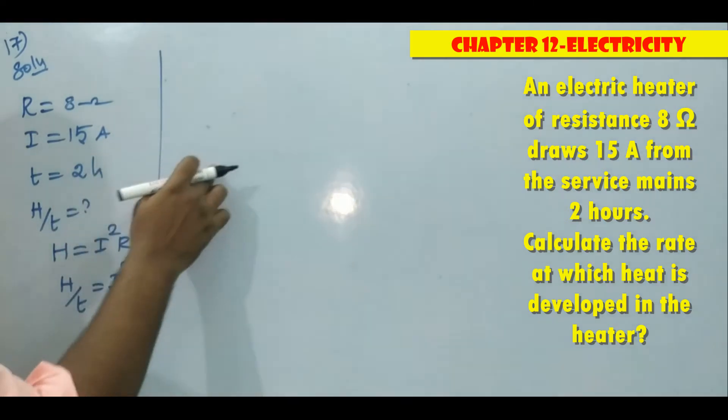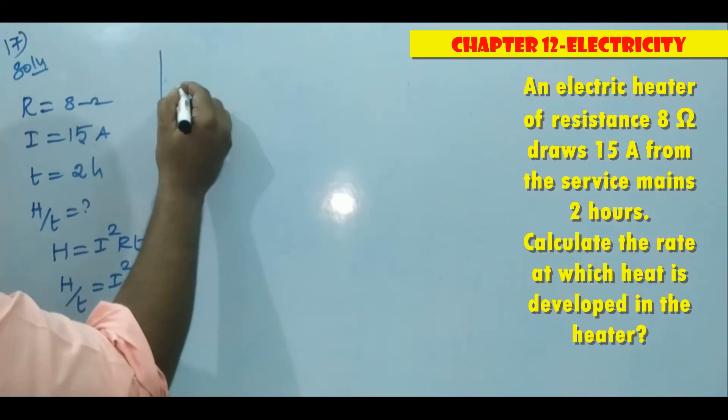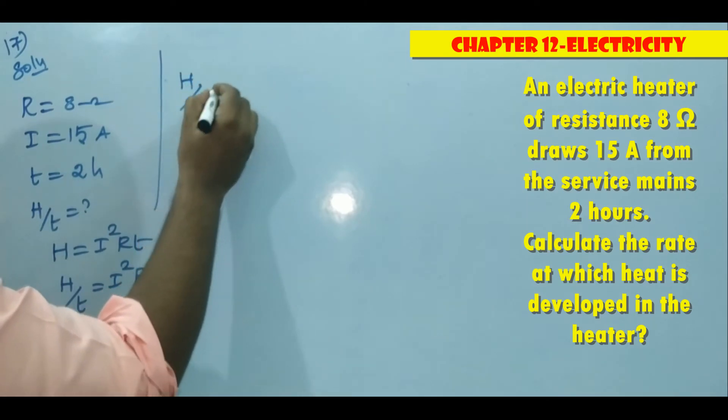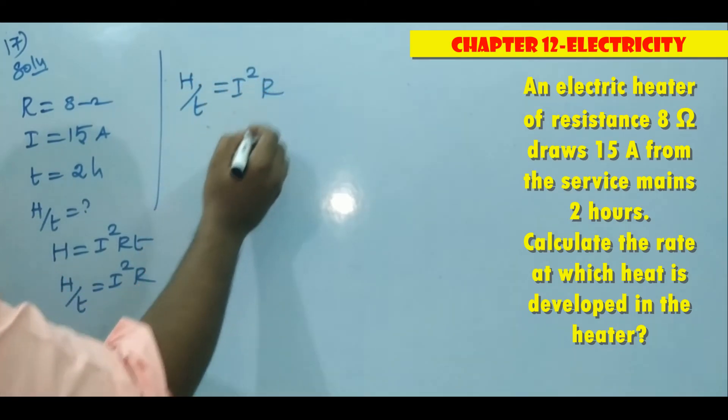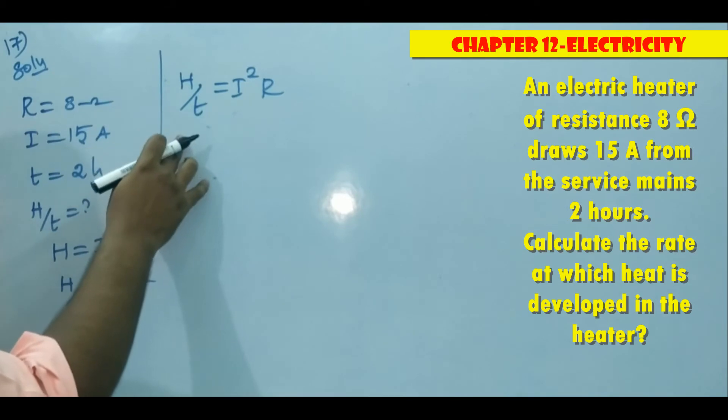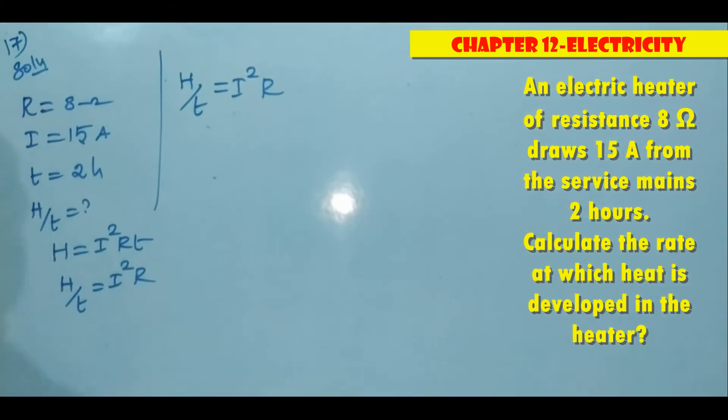So if you substitute this value in this formula then we will get answer. Then h by t is equal to i squared r. So h by t. h by t means what? That is power.